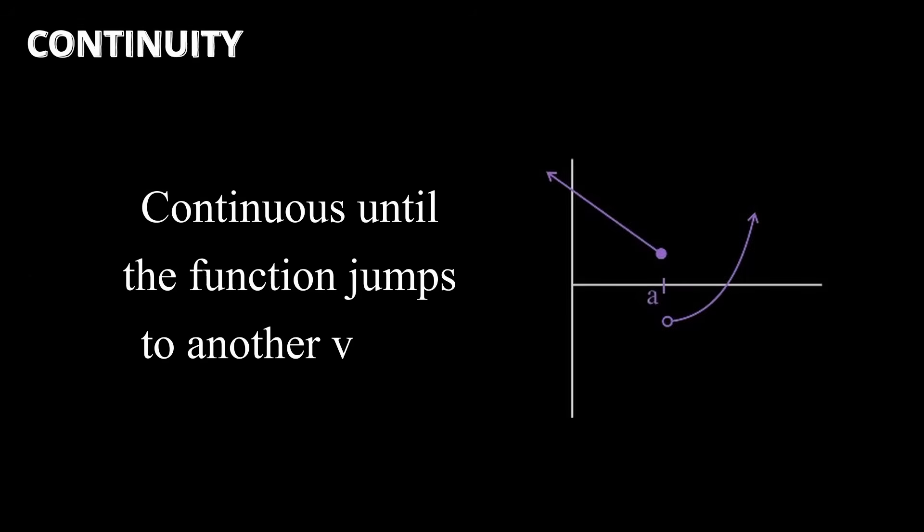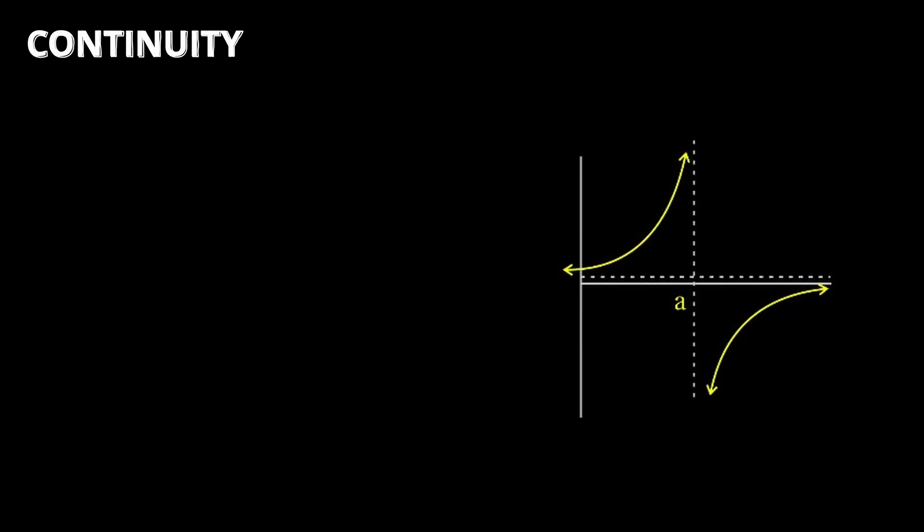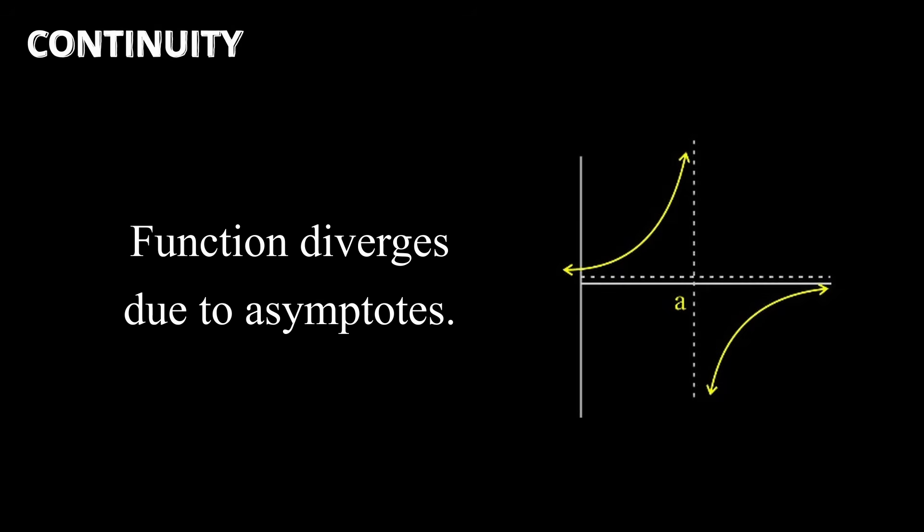The jump discontinuity, which is continuous until a certain point where the function jumps to another value and continues from there. Then you have the infinite discontinuity, where asymptotes force the function to diverge.